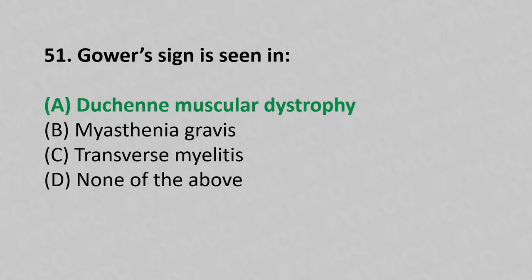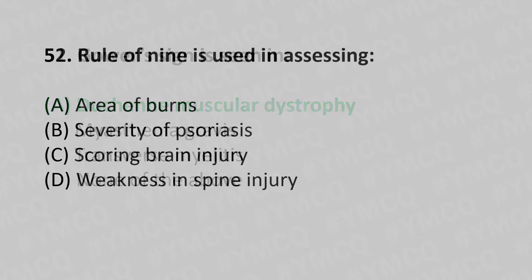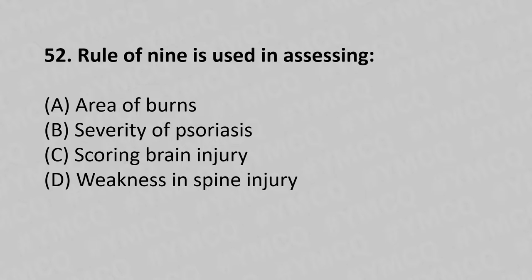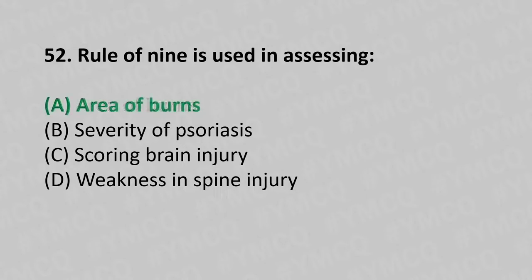Moving to our 52nd question. Rule of 9 is used in assessing: Option A, Area of burns; Option B, Severity of psoriasis; Option C, Scoring brain injury; Option D, Weakness in spine injury. And the answer is Option A, Area of burns.